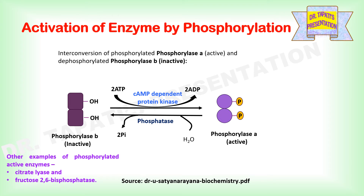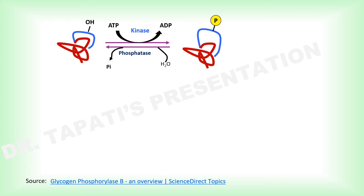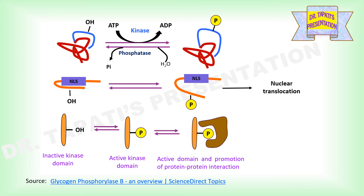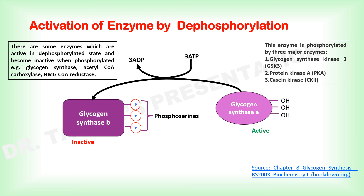Other examples of active phosphorylated enzymes are citrate lyase and fructose-2,6-bisphosphatase. The key result of phosphorylation is that a neutral serine is masked by an anionic phosphate group, altering intermolecular attractions and protein conformation. For some proteins, such as transcription factors sequestered in the cytosol, conformational changes can unmask nuclear localization signals, or create binding domains that promote protein-protein interactions, as occurs with protein tyrosine kinase receptors.